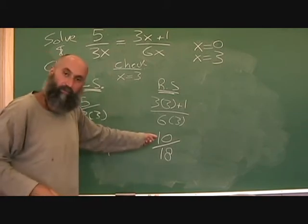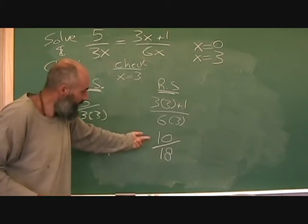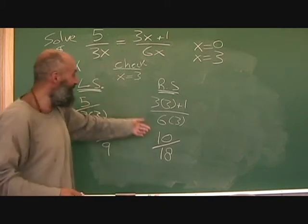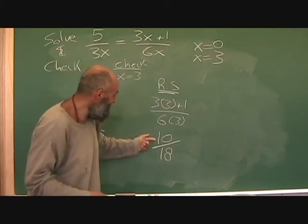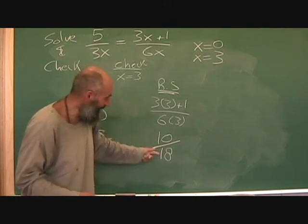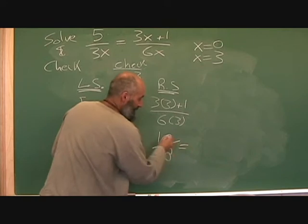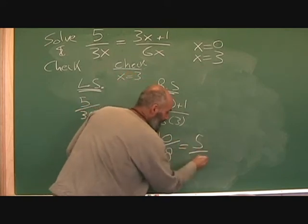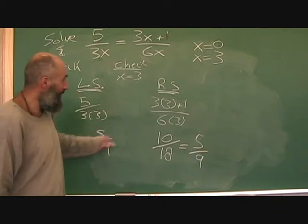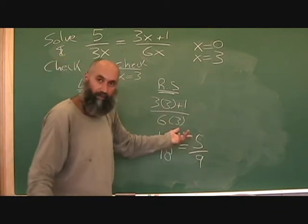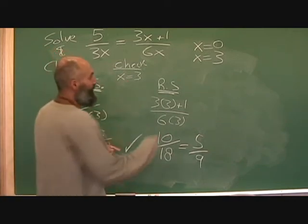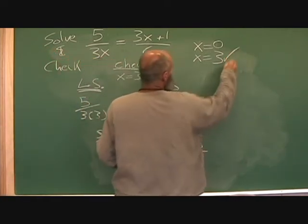Now, five over nine, is that equal to ten over eighteen? Well, yeah, it is. If you remember, well obviously you should remember. If we've come this far, we shouldn't have to go through simplifying this. But two goes both into ten and eighteen. So ten over eighteen is five over nine. And the left side of the equation is five over nine. The right side of the equation is five over nine. And this works out. So x is equal to three is a solution. You put a little check mark here, so that works.